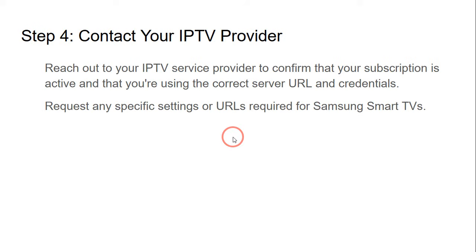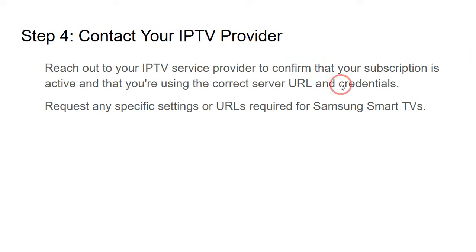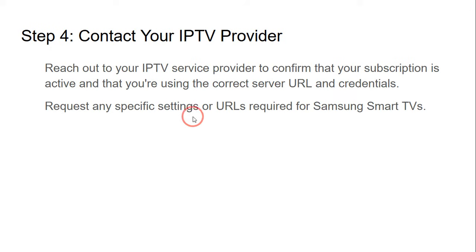If this does not work, move on to step number four: contact your IPTV provider. Reach out to your IPTV service provider to confirm that your subscription is active and that you are using the correct server URL and credentials. Request any specific settings or URLs required for your smart TV.